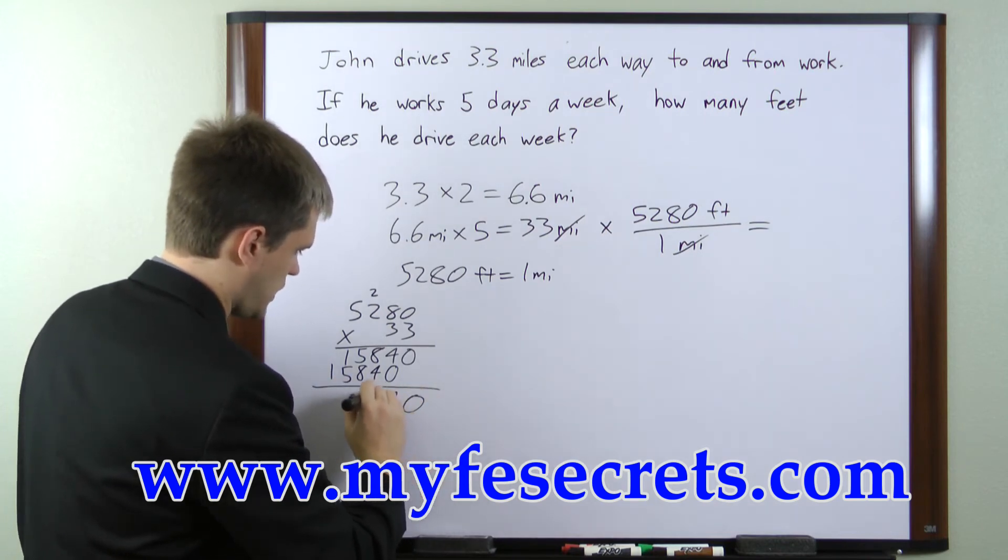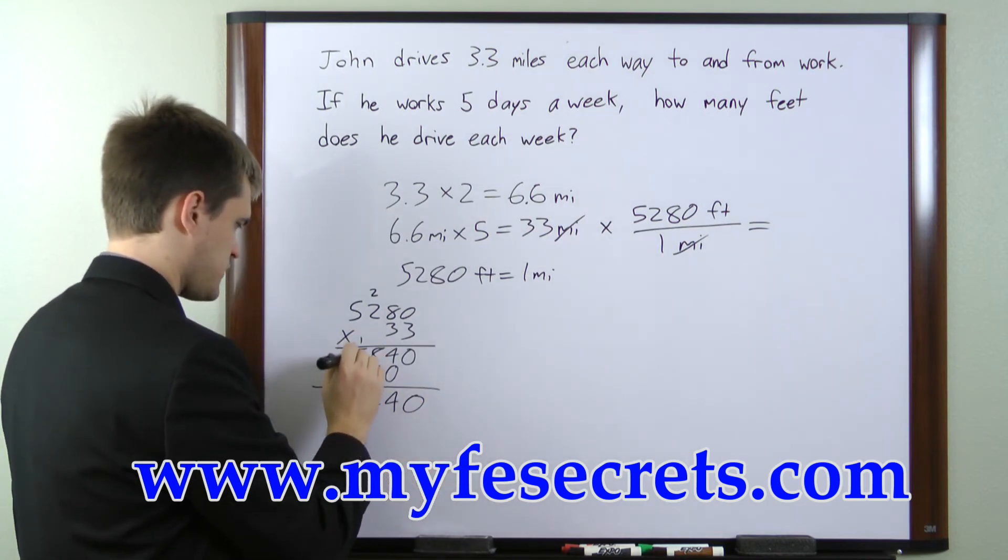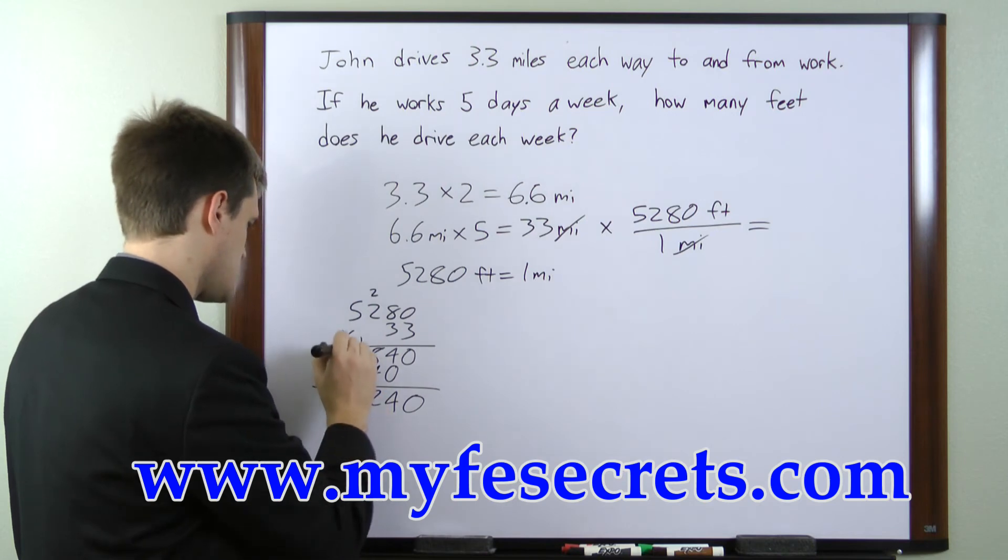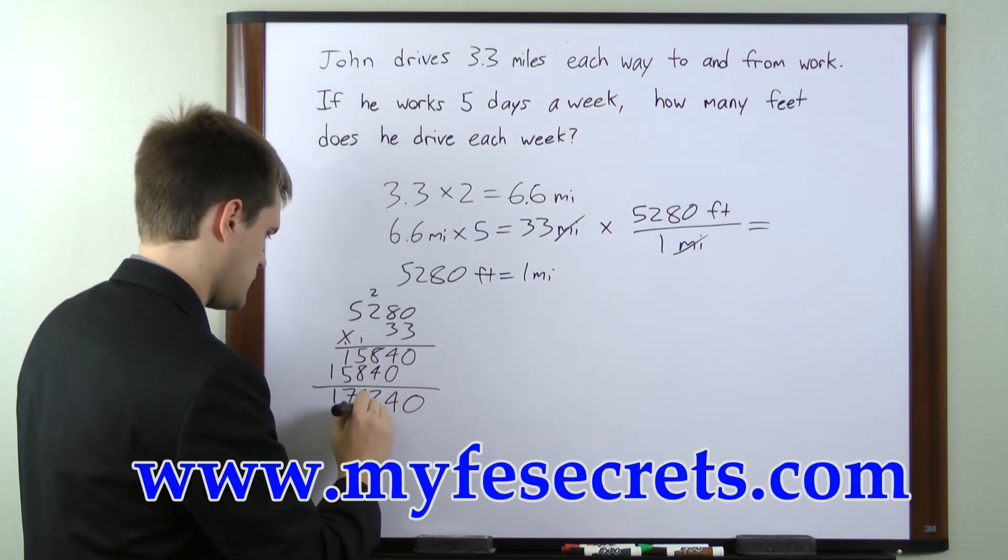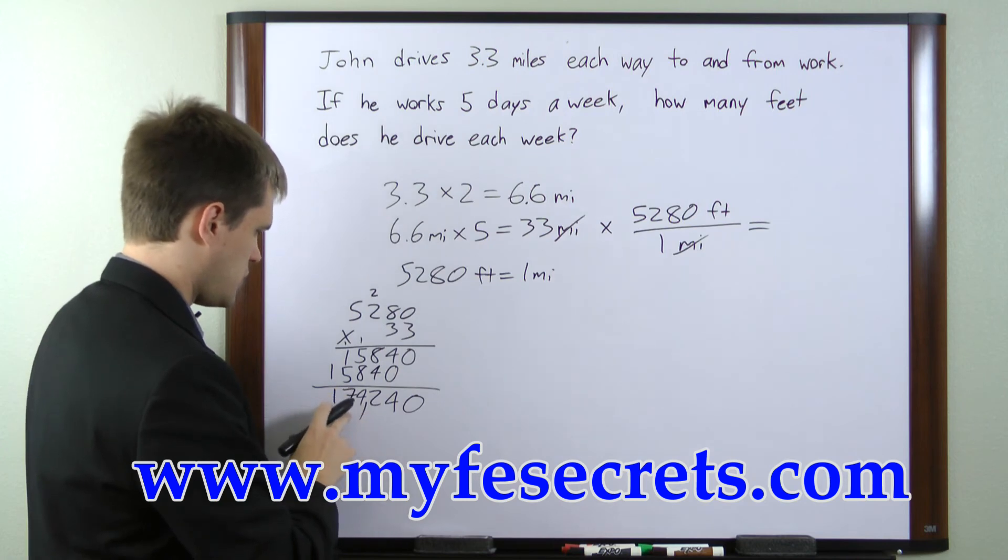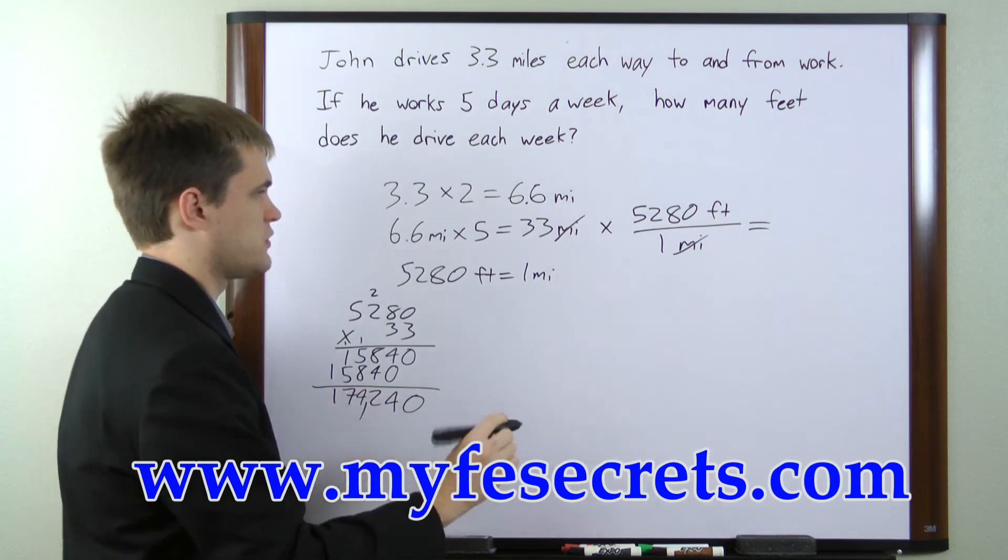So we'll add these two up. 8 plus 5 plus 1 is 14. 5, 1, 0, 1 is 7. 1. So we know that this is 174,240.